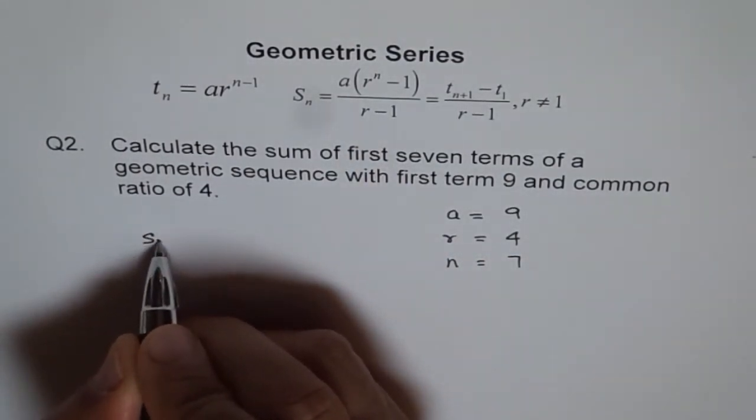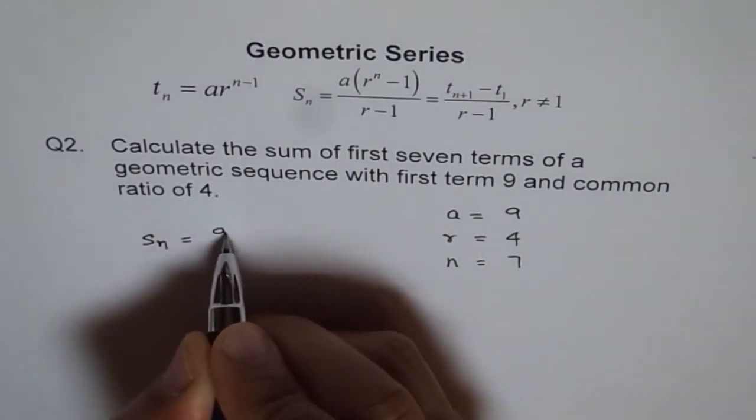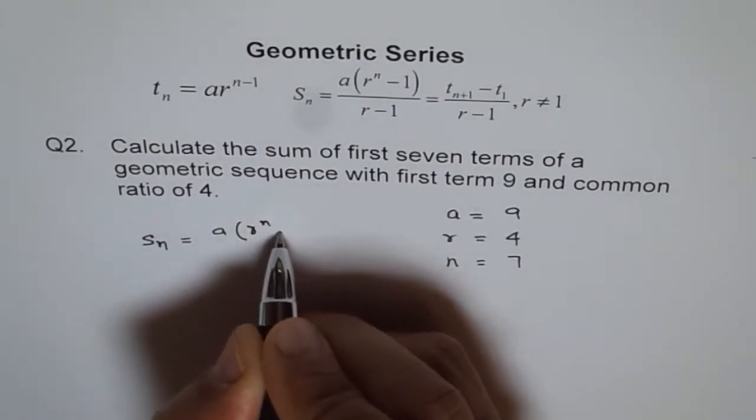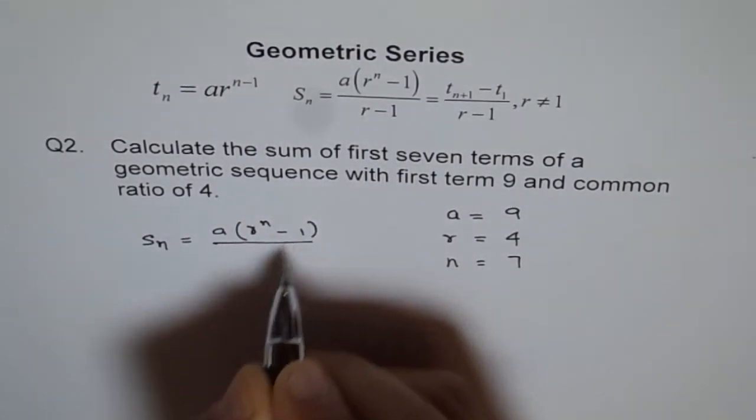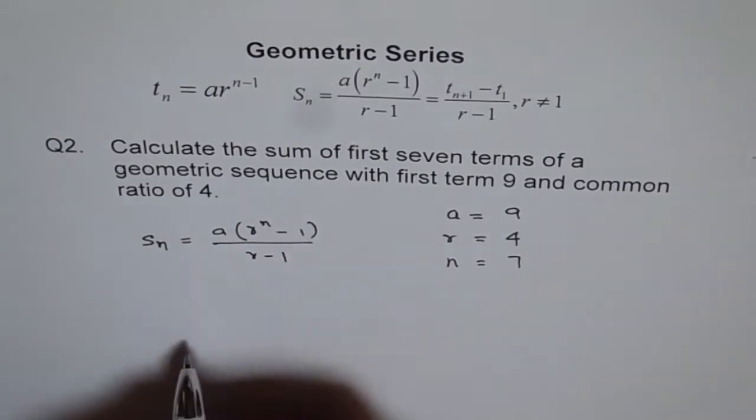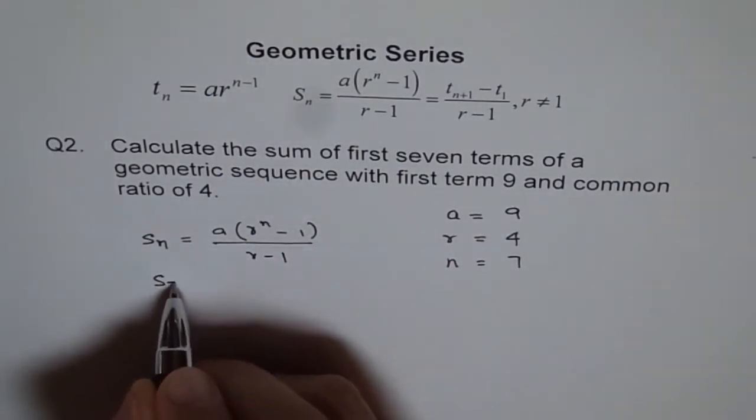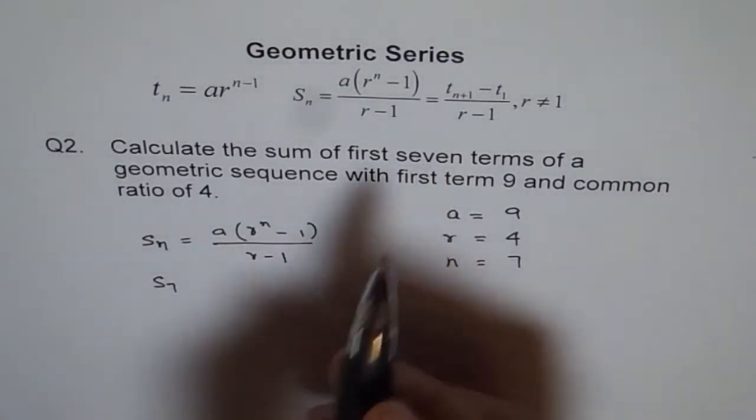So we will use Sn equals A times R to the power of N minus 1 divided by R minus 1. So S7, the sum of first 7 terms,